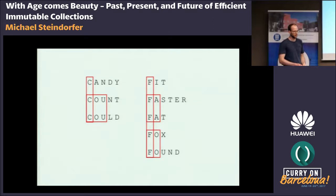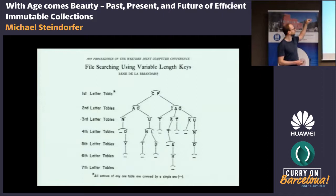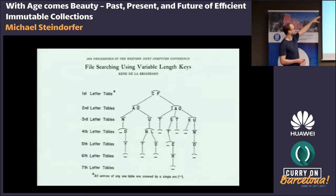Trie data structures were conceived in the late 1950s and early 1960s, independently by two different researchers. If you look at the papers describing how they conceptually devised Trie data structures, you can see exactly that: you have a tree where you encode the common prefixes. In this case, we have a tree of tables that always map from one character to the possible subsequent characters that can follow.